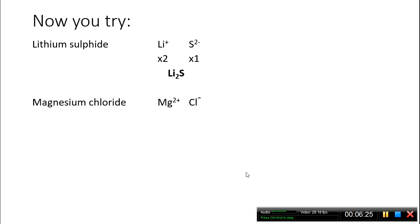Magnesium chloride. Magnesium's got a 2+ charge, chloride's got a 1- charge. For the charges to cancel out, I must have 2 chlorides for every 1 magnesium. My formula becomes MgCl2.